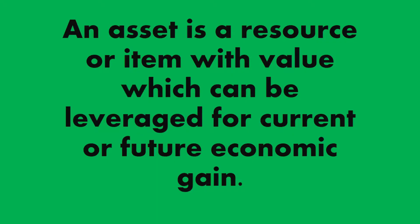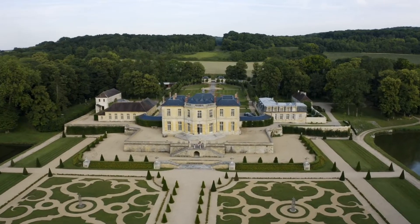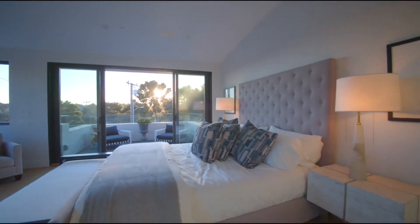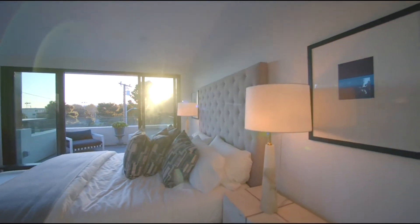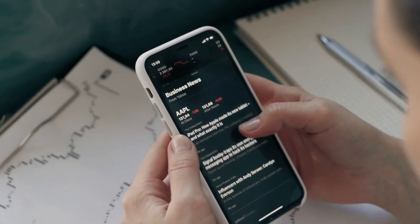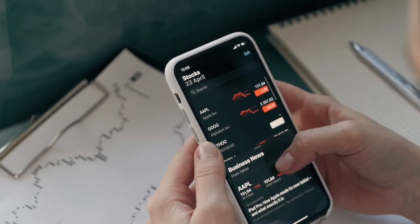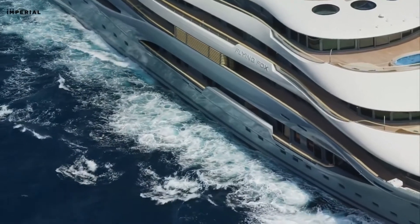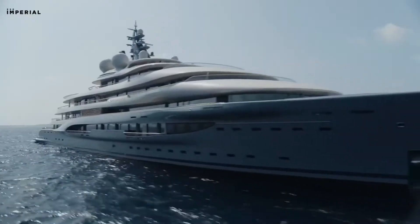An asset is a resource or item of value that can be leveraged for current or future economic gain. This means real estate, automobiles and cash can all be placed in this category. A house can be rented and used to generate income while a motor vehicle can be used in the operation of a business for profit. Cash can also be used to create income streams when invested in stocks, bonds or derivatives. The underlying principle when identifying assets is the recognition that they create an economic benefit and put more money into your pocket.